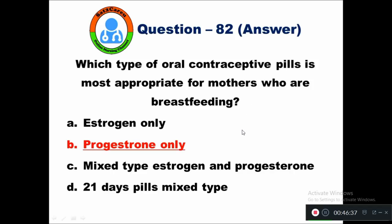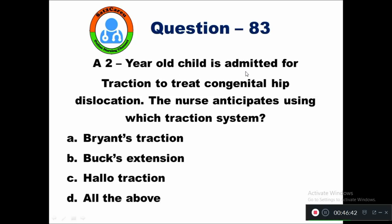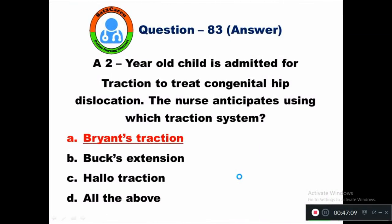Question 83: A 2-year-old child is admitted for traction to treat congenital hip dislocation. The nurse anticipates using which traction system? Option A Bryant's traction, B box extension, C halo traction, D all of the above. The nurse anticipates using Bryant's traction system.